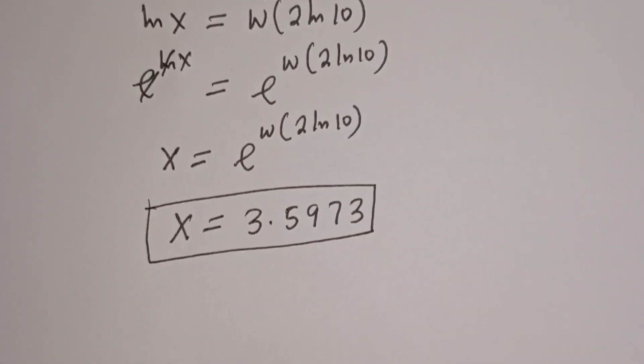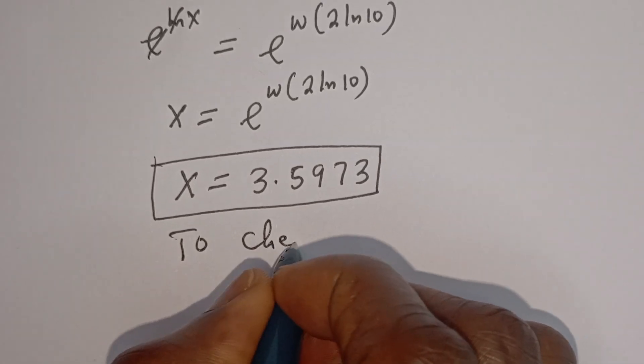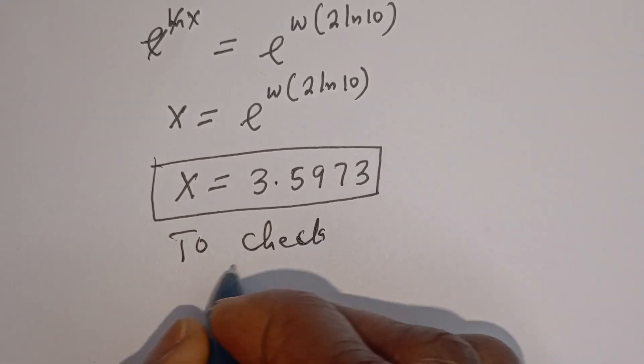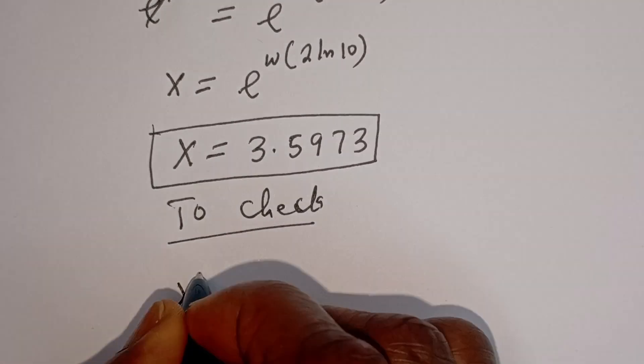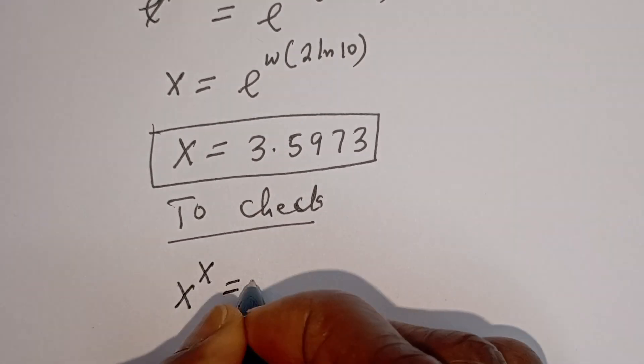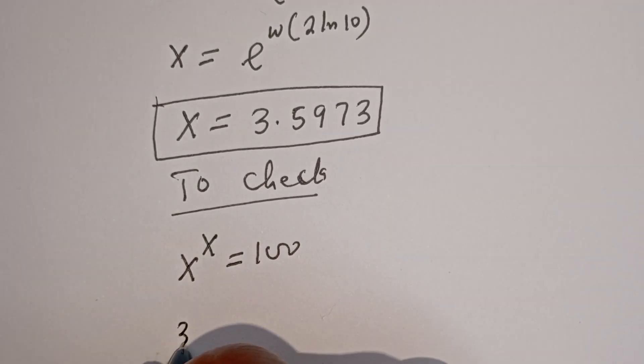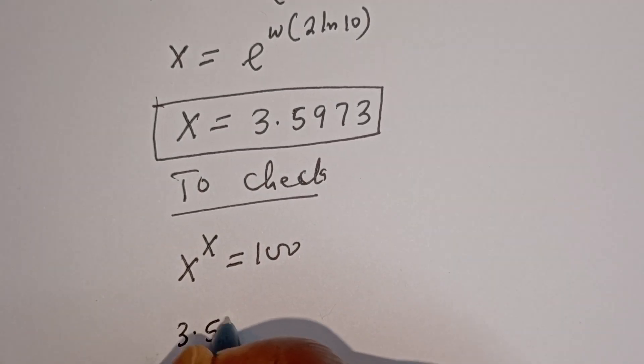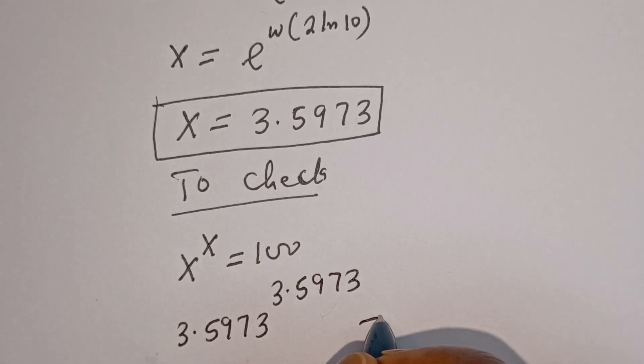We can check to confirm if this answer is correct. Let's check. To check, we have the given equation S to the power of S is equal to 100. Then 3.597 to the power of 3.597, this is approximately equal to 100.